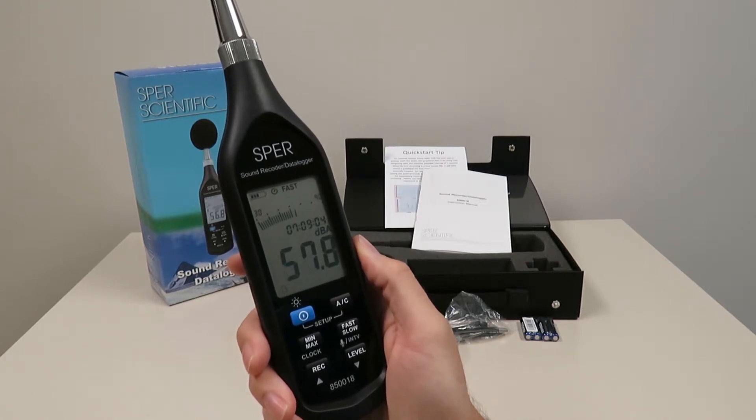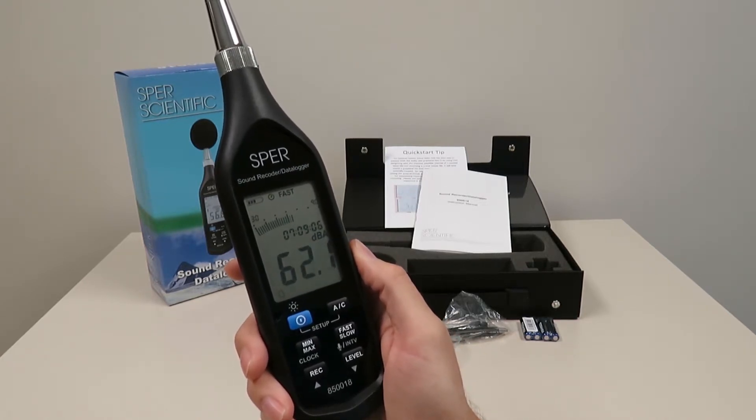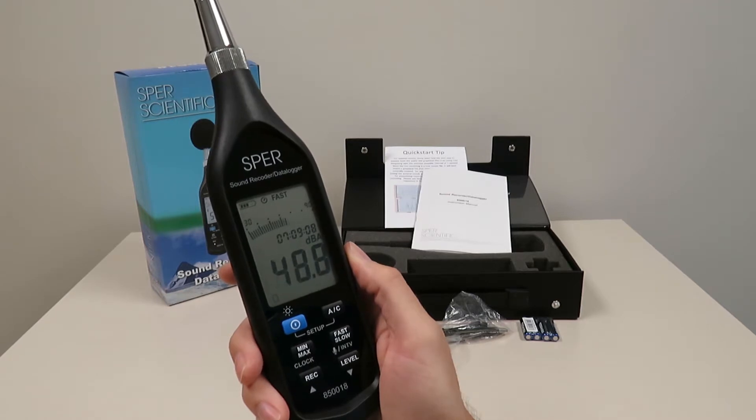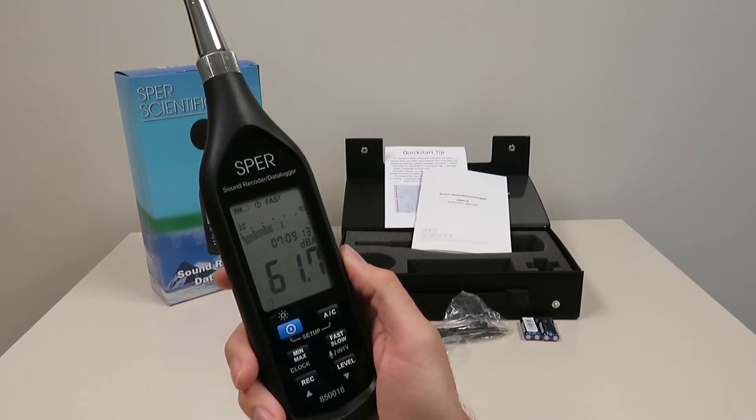Features A or C frequency weightings and fast slow time weighting options, min, max, over, under range alarms, AC or DC recorder output and an optional power off feature.